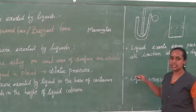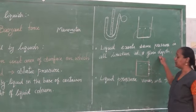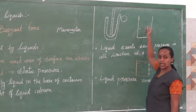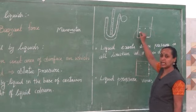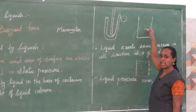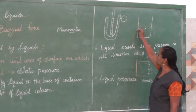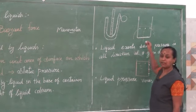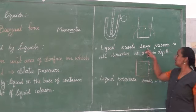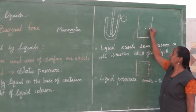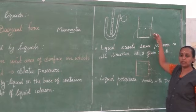Now we are going to see the next concept: liquid exerts the same pressure in all directions at a given depth. For example, take a plastic bottle and punch three holes on the sides at the same height from the base. Now fill the bottle with water and you can see the water will rush out with the same pressure and fall on the ground at the same distance.